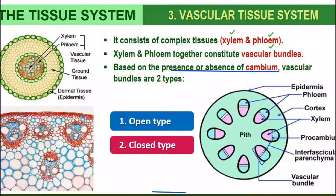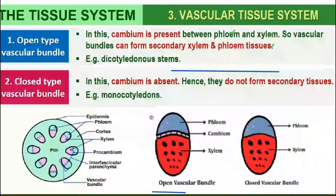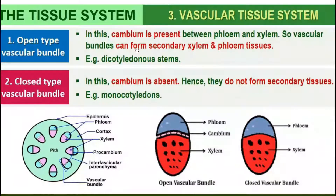Cambium cells are found in between xylem and phloem. If cambium is present, that is an open vascular bundle. If cambium is absent, that is a closed vascular bundle. An example of open vascular bundles is found in dicotyledonous stems, while in monocots, cambium is absent.